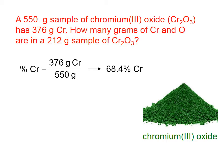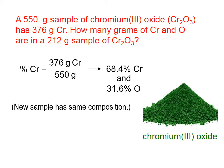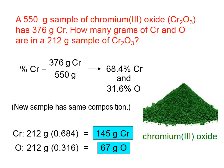Now, this second sample — the 212 gram sample — has that same percentage of chromium and that same percentage of oxygen. Each sample of a given compound has a certain percentage of the various elements in it. We simply need to find 68.4% of 212, and 31.6% of 212, and that will tell us how many grams of chromium and oxygen, respectively, are in this new sample.